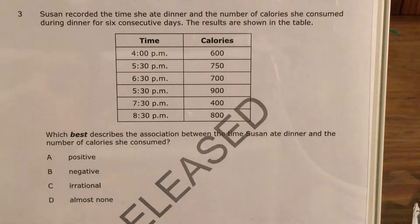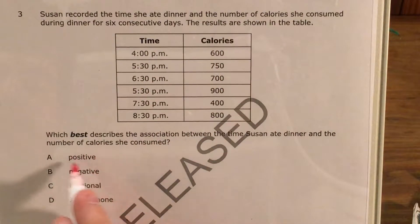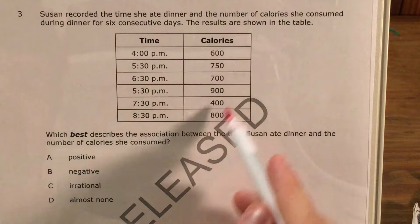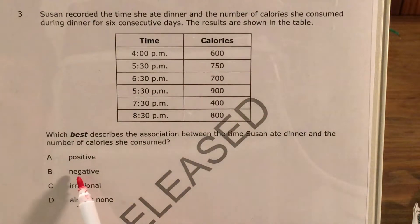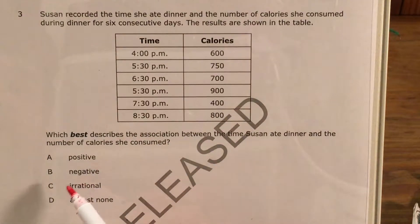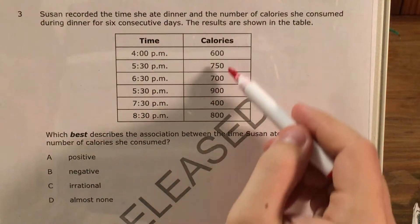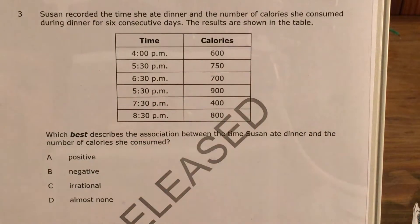So I first want to talk about what each of our answer choices mean. A positive association means that as time increases, calories increases. So if this were a positive association, the later Susan ate dinner, the more she'd be eating. Negative works the opposite way. As one of these goes up, the other one goes down. So if this were a negative association, as Susan ate later, she would have eaten less, or she would have eaten fewer calories.